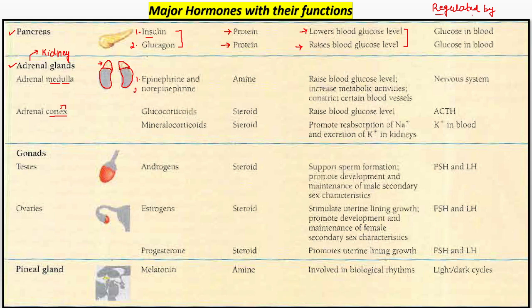Yahaan se aap dekhte ho kuch hormones medullary region se aa rahe hain — epinephrine and norepinephrine, jin ka chemical nature hai amine. Amine basically they are the derivatives of ammonia only. Epinephrine and norepinephrine kya kaam kar rahe hain — they raise blood glucose level, metabolic activities ko increase karna hai, blood vessels ko constrict karna hai. Adrenaline rush — adrenaline bhi bolta hai is hormone ko — jiska primary kaam hota hai ki cardiac output ko badana hai jab bhi emergency conditions hain.